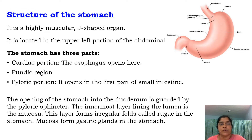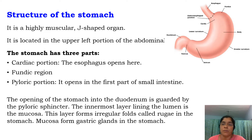The stomach is a highly muscular J-shaped organ located in the upper portion of the abdomen. The stomach has three parts: the cardiac portion which opens from the esophagus, the fundic region, and the pyloric portion. The pyloric portion opens into the first part of the small intestine.